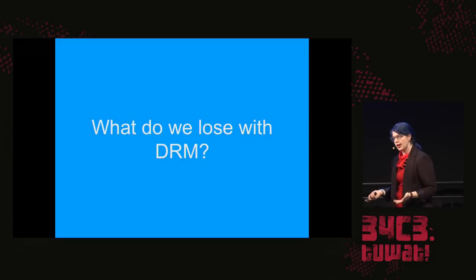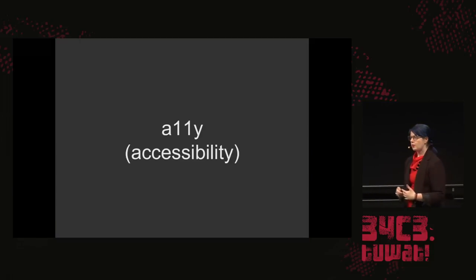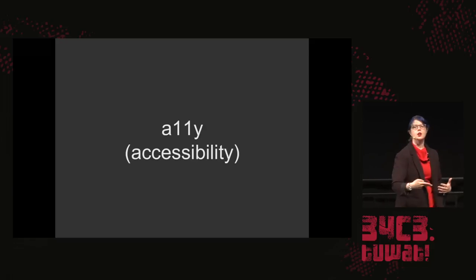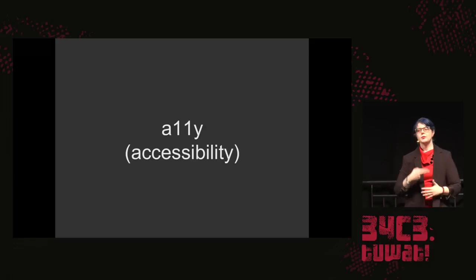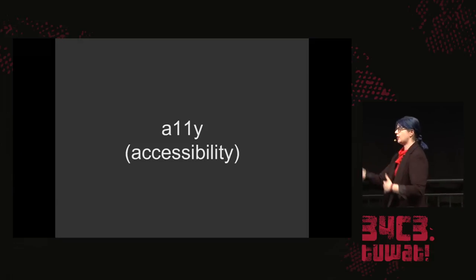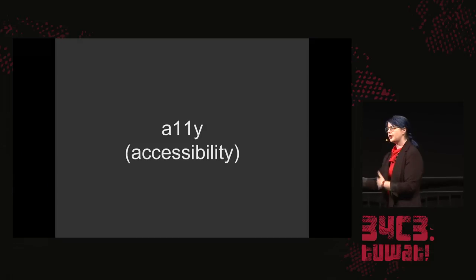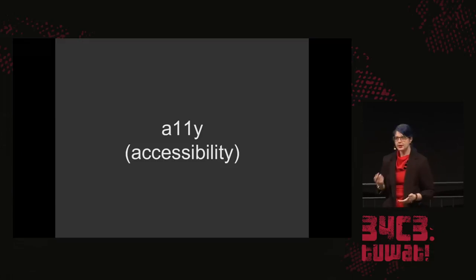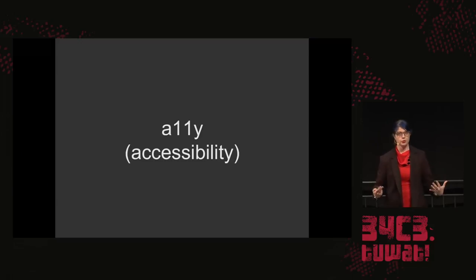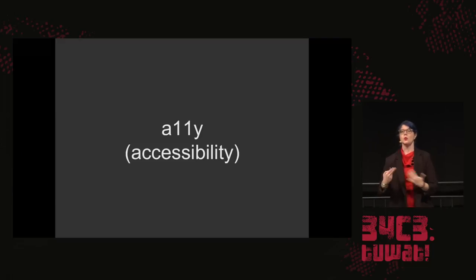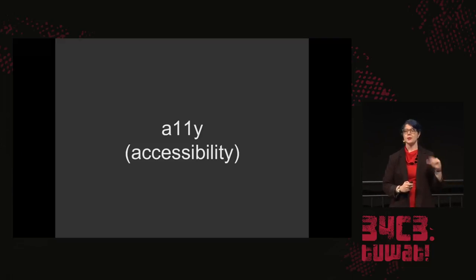So what do we lose with DRM? As the people using it, we're losing something. One of the things we lose is accessibility. When you have a piece of DRM media or material — because you can't access it, can't change it, can't modify it, can't use it on your terms, can't share it, can't share your modifications — we really lose accessibility. In this particular case, accessibility refers to the ability to change something in order to make it more usable for people who have different interactive needs.